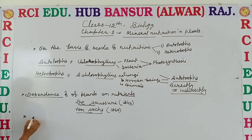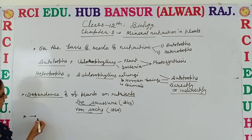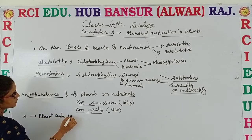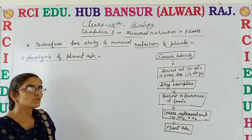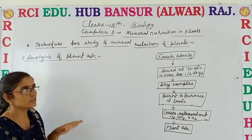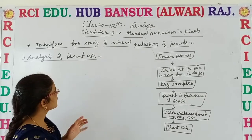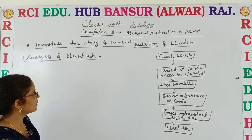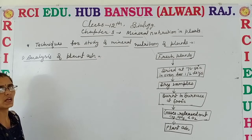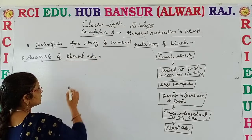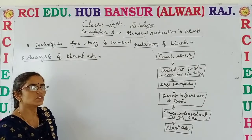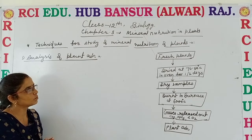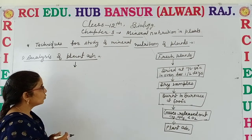Now we discuss different experiments to identify how plants are dependent on nutrition. The first method we discuss is the Plant Ash Method. This method, called nutrimine analysis, explains how much nutrition — including carbon, nitrogen, oxygen, and other nutrients — is required by plants and what amounts are present in plants.